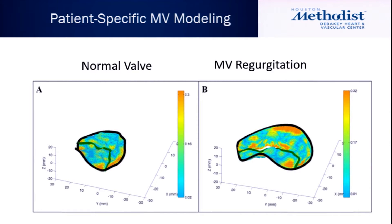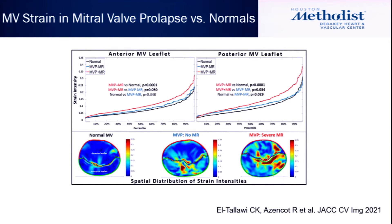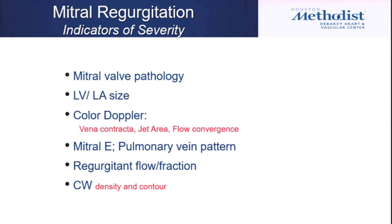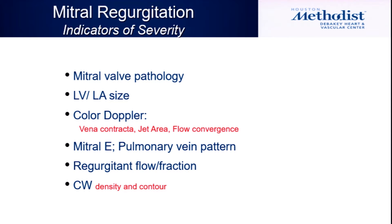We were wondering whether this increase in strain was actually just related to the severity of regurgitation, so we were looking for mitral valve prolapse without regurgitation. Indeed, mitral valve prolapse without regurgitation has increased strain and increased deformation. This has implications for every one of you, including our surgeons.